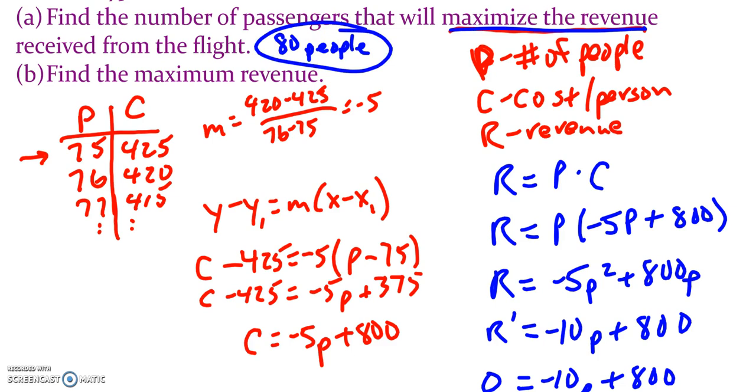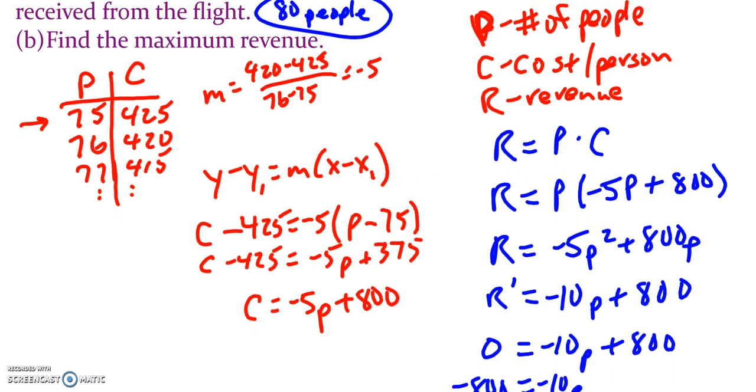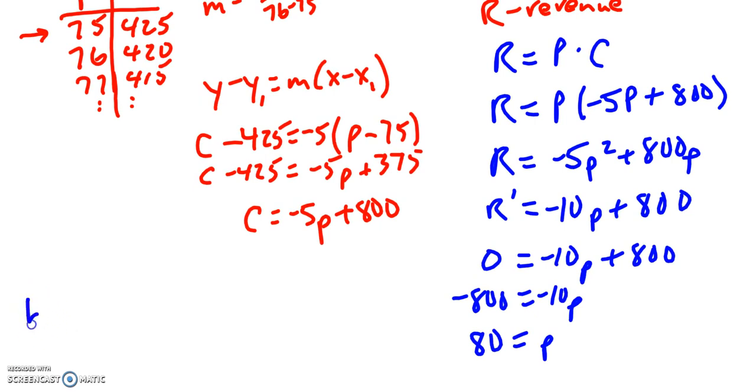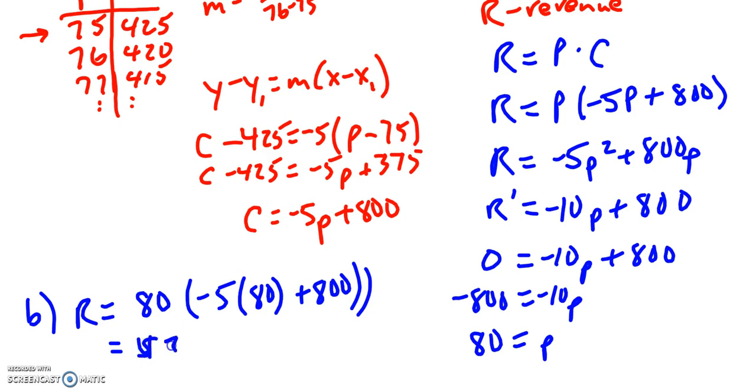And now we want to find Part B, which is find the maximum revenue. So in order to find the maximum revenue, we need to use our revenue equation here and find R. So we can plug in 80 for our equation here. This is Part B. So R equals, and I'm going to replace 80 with P there. If we plug that in our calculator, we should get a maximum revenue value of $32,000.